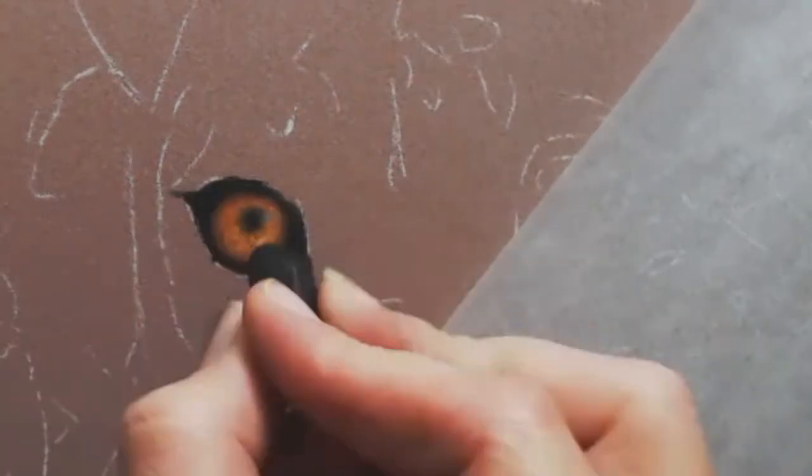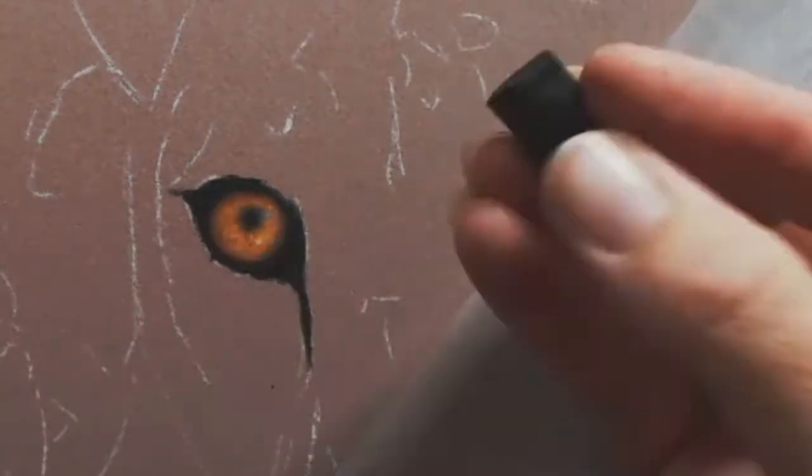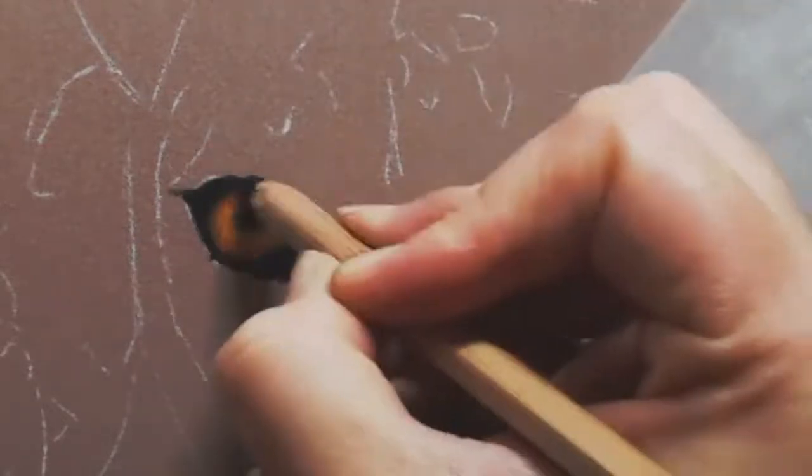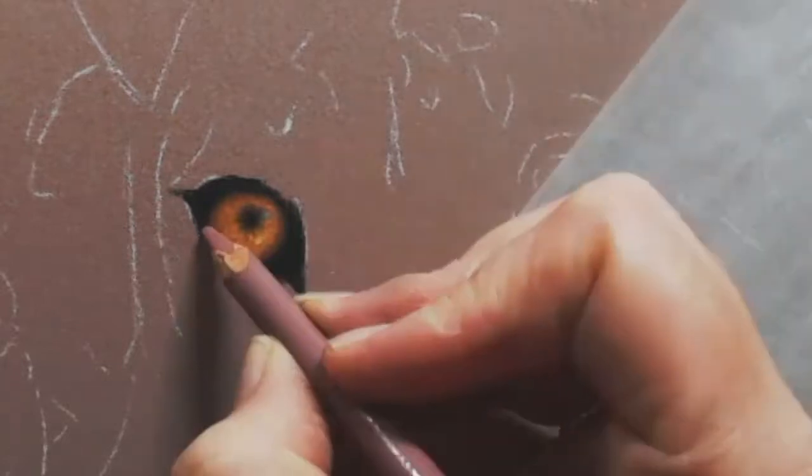Just using a black there to soften it out. It's quite fiddly to use a pastel stick for this soft area, so it's important, if you can, to try and get a chiseled edge on the soft pastel sticks.